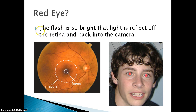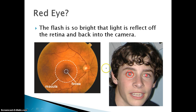What causes red eye? Well, when you take a photo with a camera, the flash is actually so bright that some of the light reflects off of the retina and back into the camera. The back of the eyeball — the retina — is a nice red, pinkish, healthy color due to all the blood vessels back there. So the flash is so bright that it goes into the retina and the light bounces back off the retina and back into the camera. That's what causes red eye.